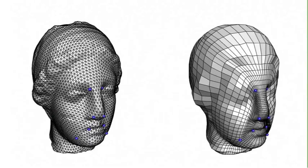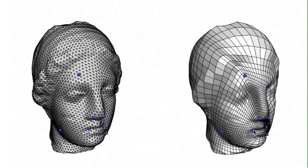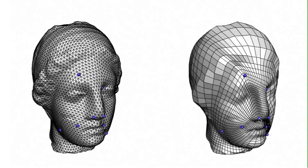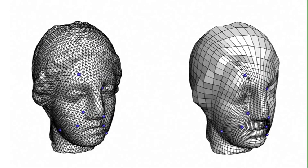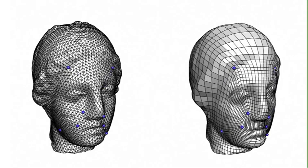By defining a coarse quad mesh and subdividing it regularly, we obtain a finer quad mesh on the target surface. Laplacian smoothing on the surface can be applied to improve the quality of the quadrangulation, and points of the coarse quad mesh can be interactively moved to produce the desired re-meshing.